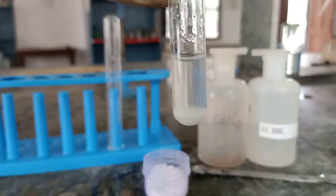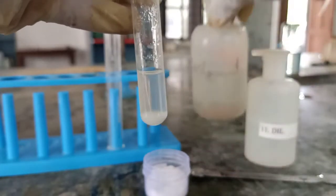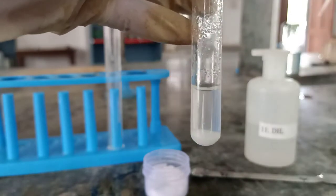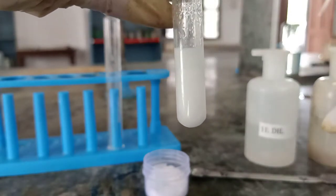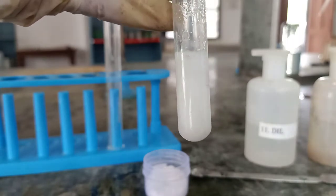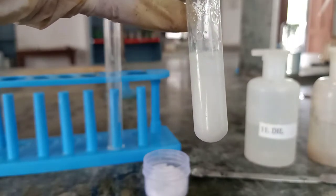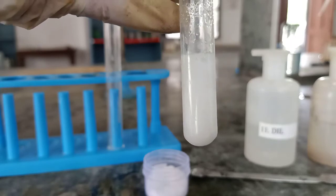So in the first confirmatory, I have prepared OS and to it, I will add few drops of calcium chloride. Again we have seen a white precipitate confirming the presence of oxalate anion in the given salt.